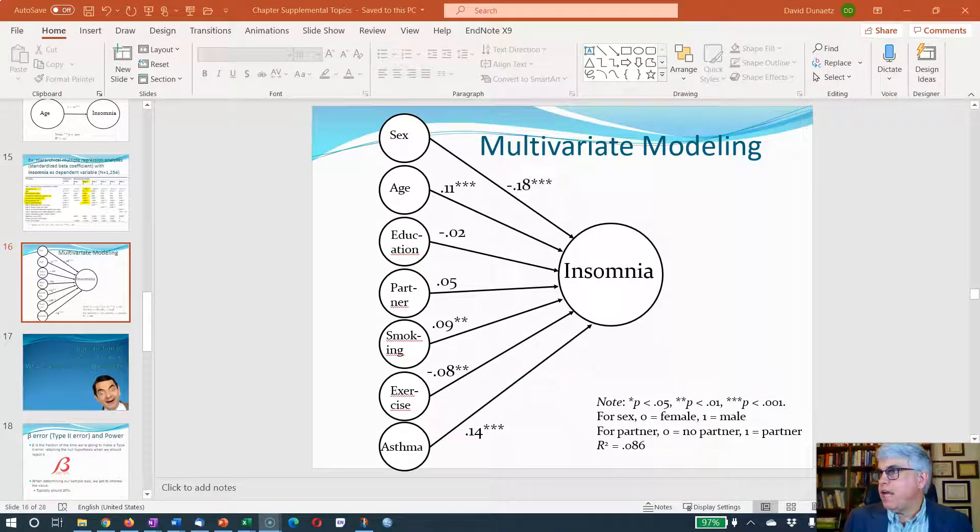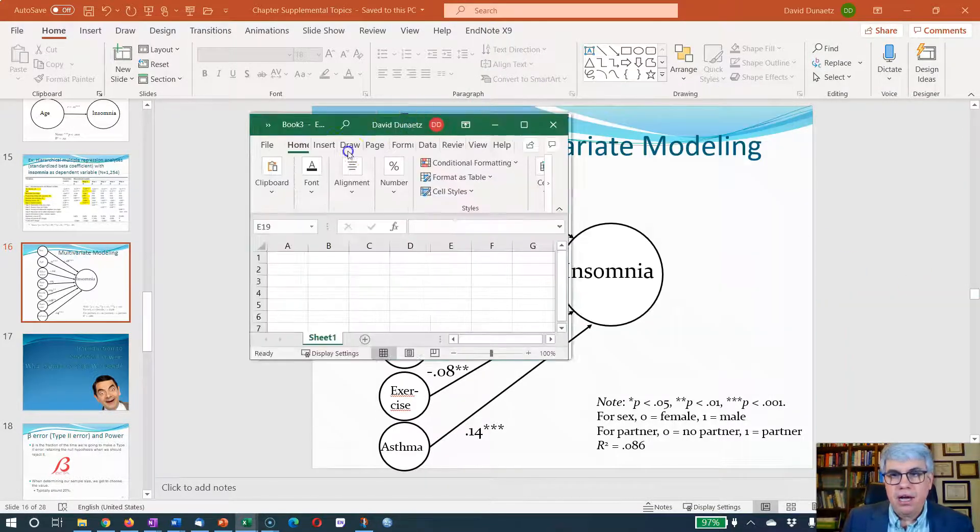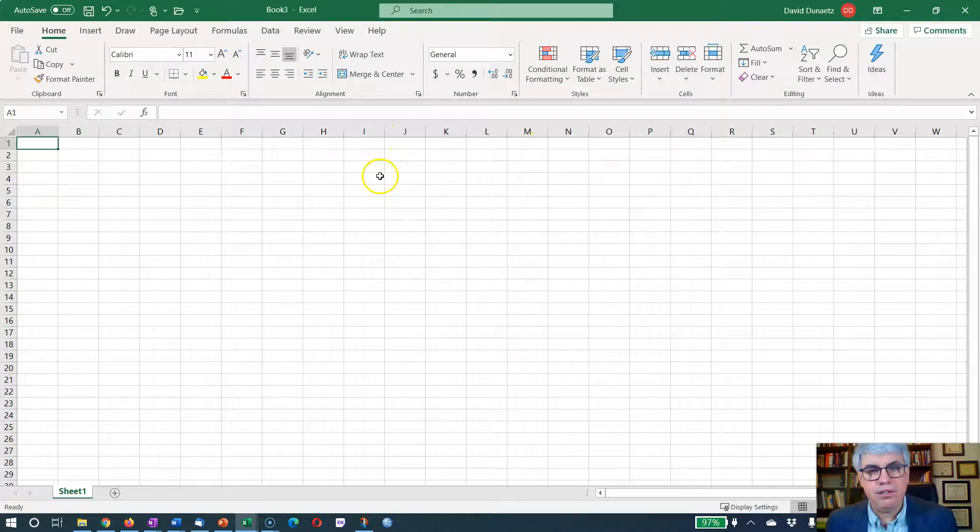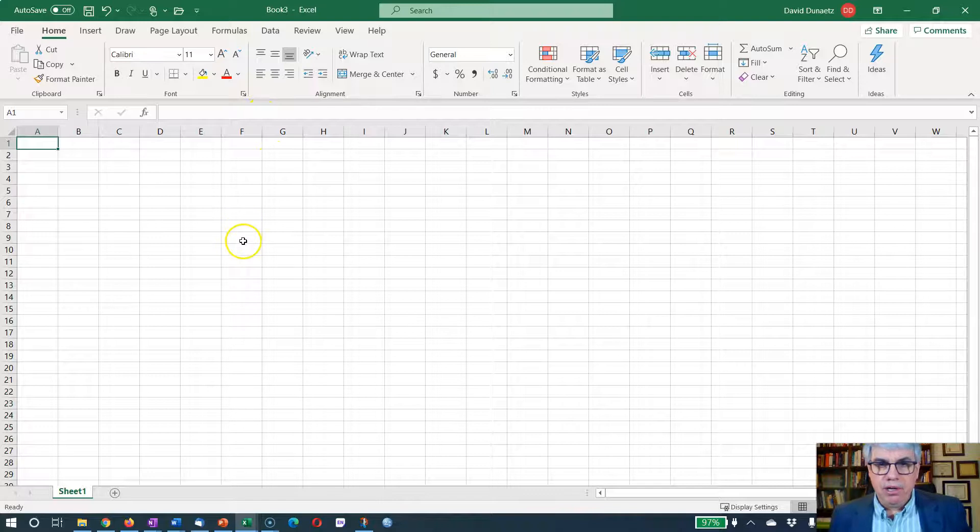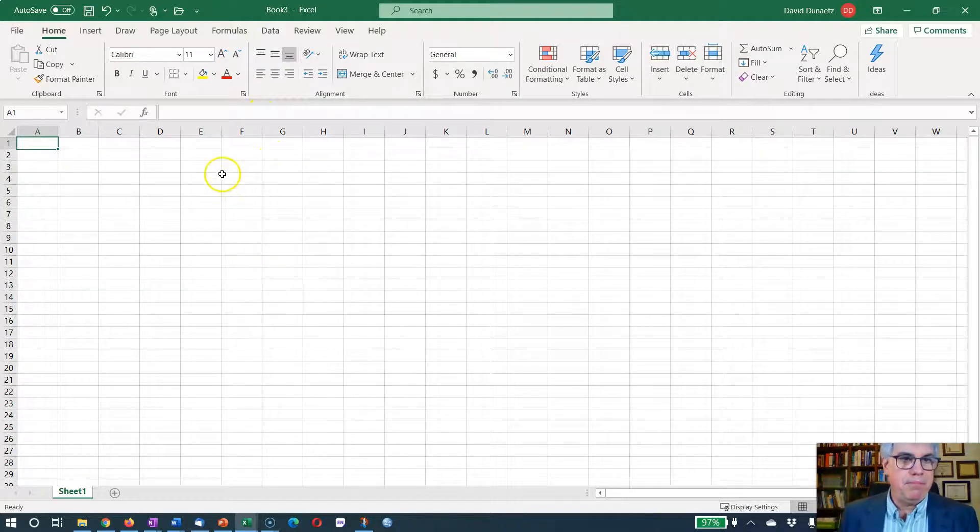So what do we have? We have sex here. Zero equals female and one equals male, so this negative number means as you go from female to male insomnia goes down. So that means males have less insomnia than females. So sex is a predictor and it's p less than 0.01.